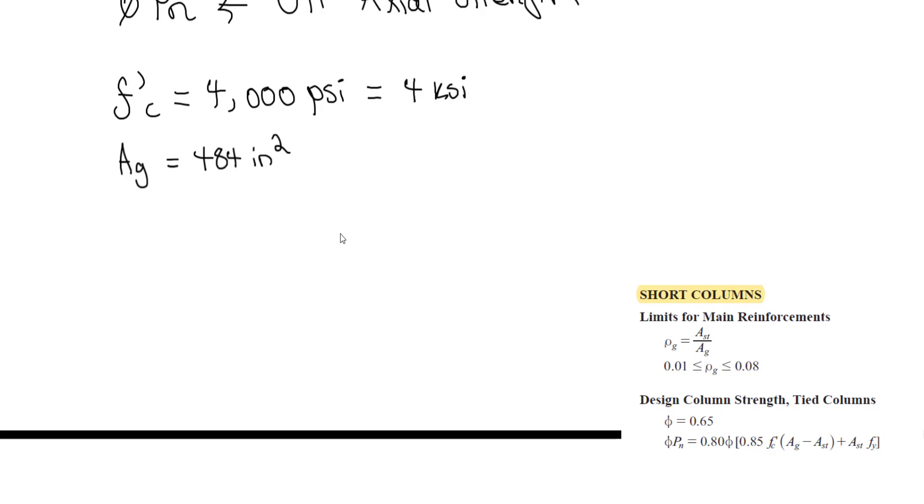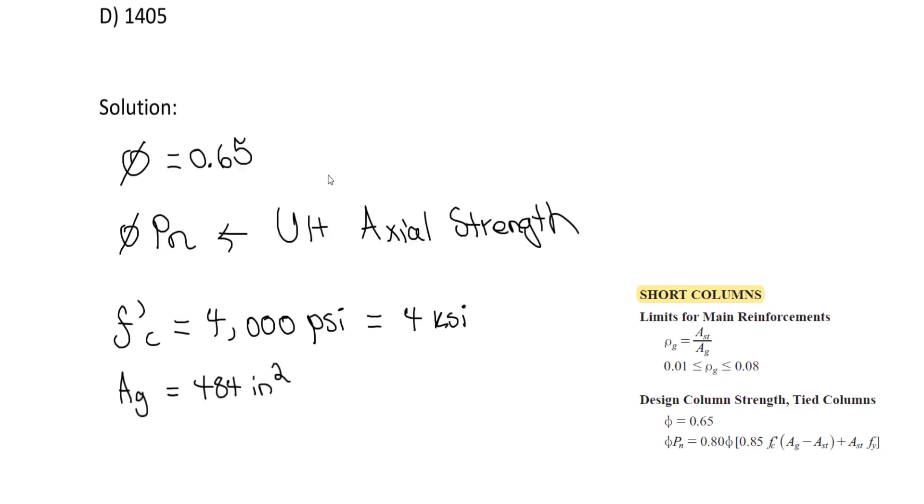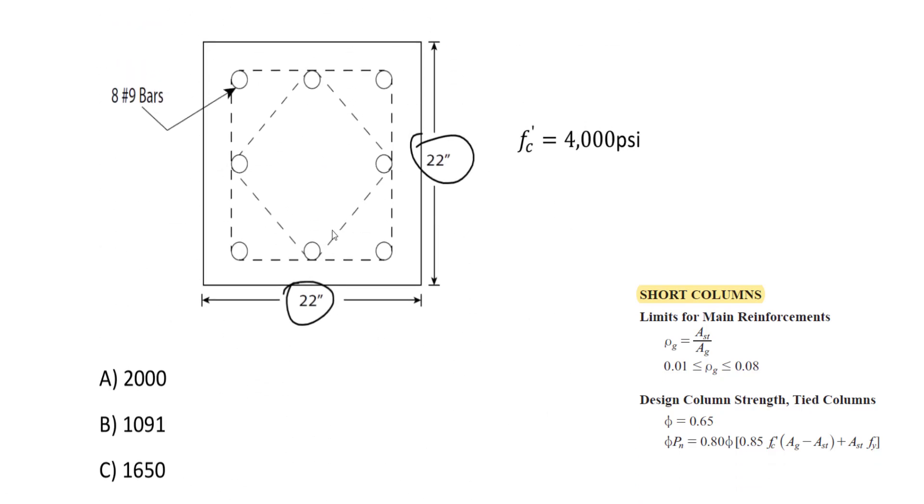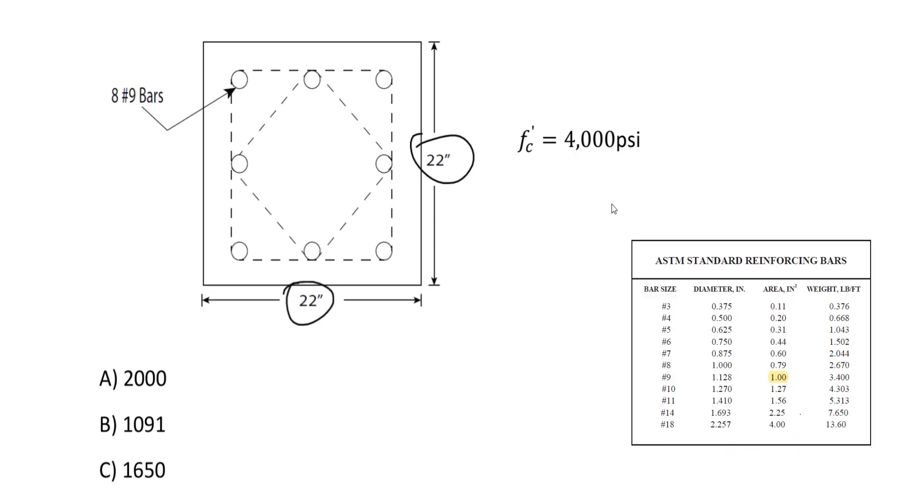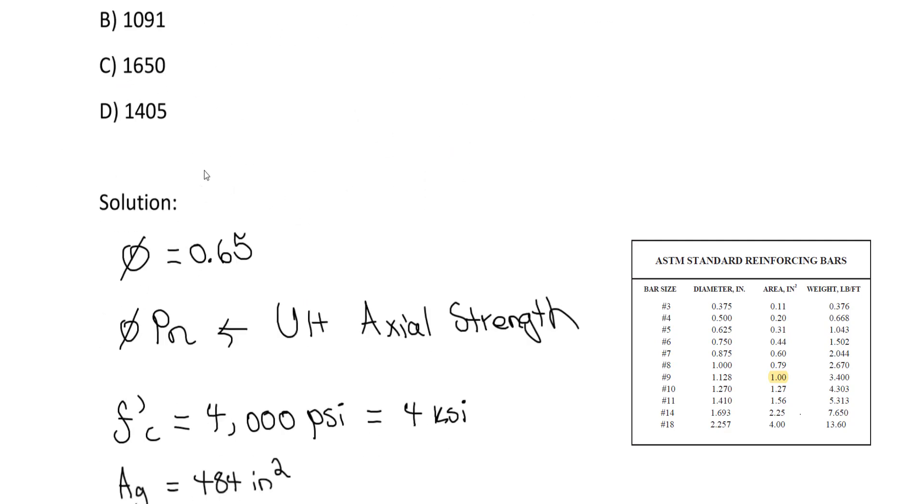Next, we determine the area for the steel bars. We have 8 number 9 bars. Using the FE Handbook 9.5 table on page 160, a number 9 bar has an area of 1 inch squared.